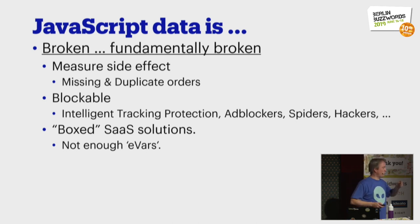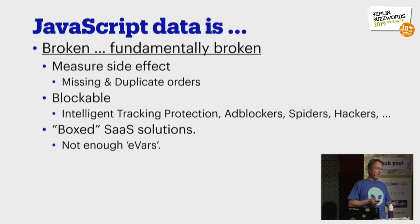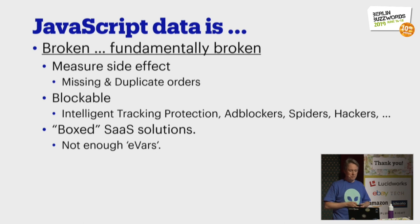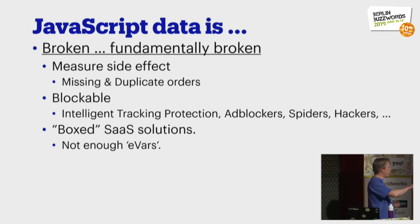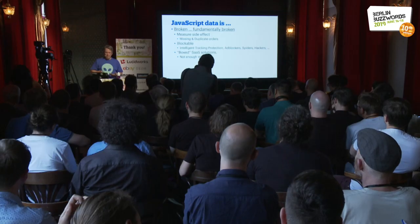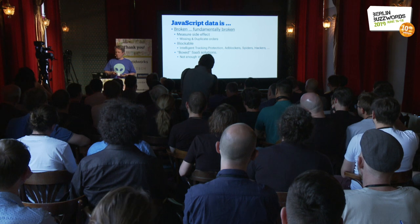These tags are blockable. ITP built into Safari and Firefox, ad blockers, robots, hackers — all those things cannot be measured using JavaScript. And many of those are boxed. In Omniture, you have something called an EVAR, a variable you can put in, but they're fixed in number. So you always have not enough of them.